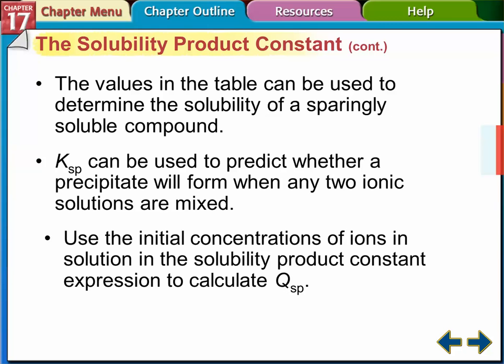Okay, so those values in the table can be used to predict whether a precipitate will form when any two ionic solutions are mixed. So we use this to figure out if we're going to get a precipitate or not. And to help do that, we calculate the Qsp. So from the initial concentrations of the ions, we calculate a solubility product constant that's from the initial concentrations, not from the equilibrium, but just from the initial ones. And that's called the Qsp.